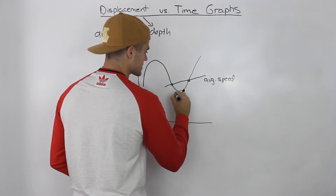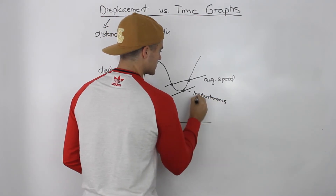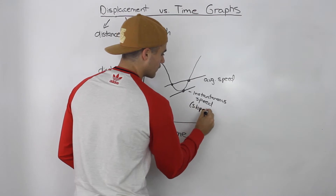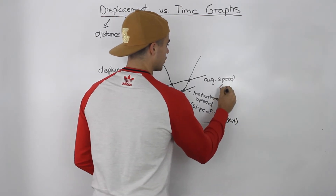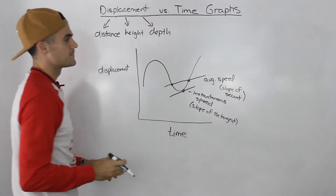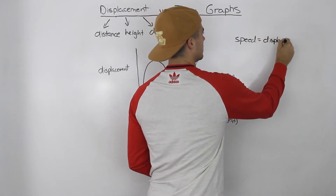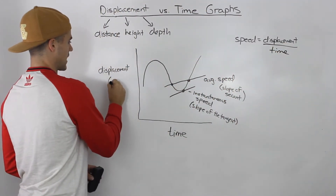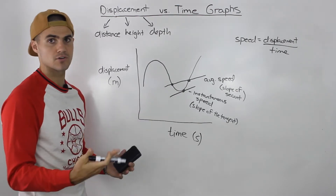You can also calculate instantaneous speed from a displacement versus time graph, and that's basically the slope of the tangent. Speed, kept very general, is basically the displacement over the time. So if displacement is in meters and time is in seconds, when we calculate the average speed or instantaneous speed, it's going to be in meters per second.